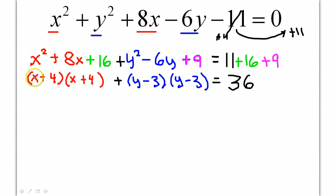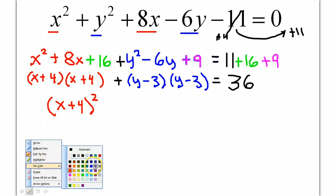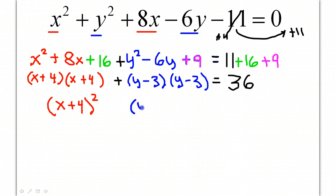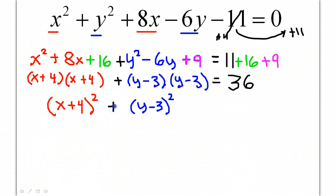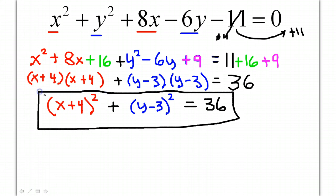Now, the reason why we wanted to make sure that we had the same thing twice was so we could put them all together in a nice little package and write (x + 4)². Similarly, instead of having (y - 3) twice, I can write (y - 3)². And right there, we have rewritten the equation, which started off in general form, and now we have rewritten it in standard form by completing the square twice.